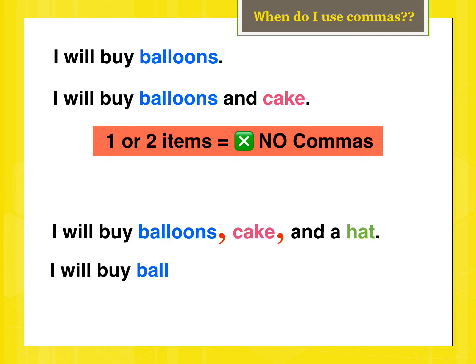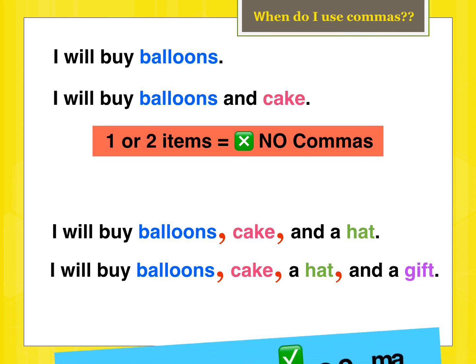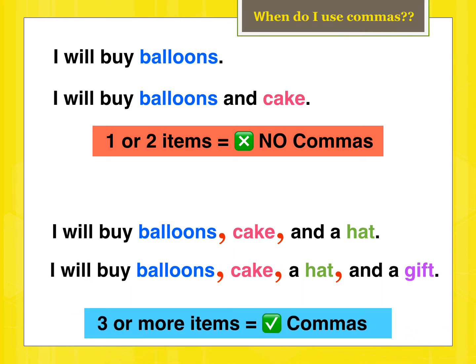Let me show you. In the sentence 'I will buy balloons, cake, and a hat,' I will put two commas and then the word 'and' with the last item. The same thing again if I have four items: 'I will buy balloons, cake, a hat, and a gift.' Here I have four items, so I will put three commas. Each comma goes after one item, then I add the word 'and.' We separate each item to make the meaning clear.